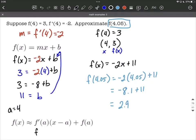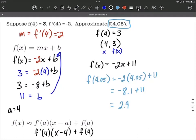So we can say that's the same thing as f prime of 4, x minus 4, and we're replacing each of the a's with 4s, plus f of 4.